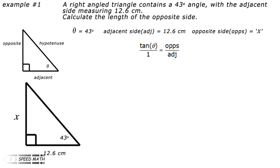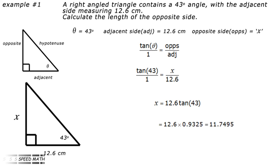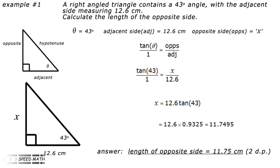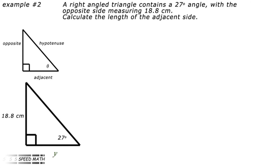Write out the tangent ratio with a 1 under tan theta: tan theta over 1 equals opposite divided by adjacent. Putting in the values: tan 43 degrees over 1 equals X over 12.6. Cross-multiplying: X equals 12.6 times tan 43 degrees, which equals 12.6 times 0.9325, which equals 11.7495. Therefore, the opposite side X equals 11.75 centimeters to two decimal places.